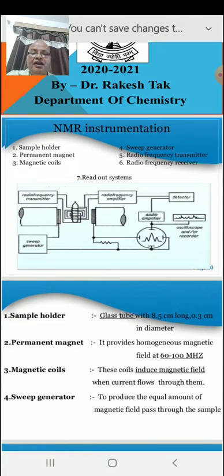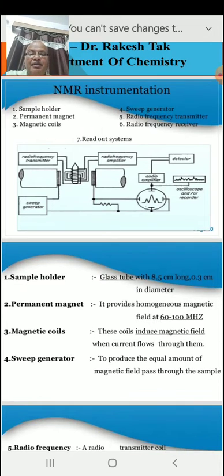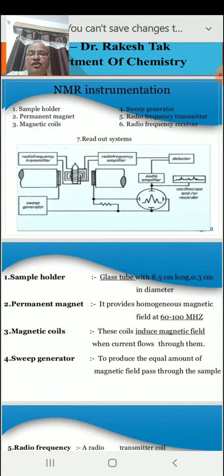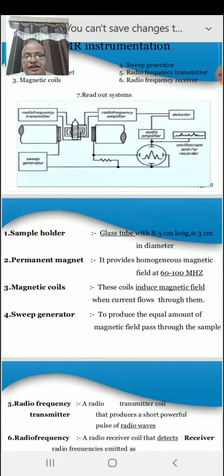The permanent magnet provides a homogeneous magnetic field of 60 to 100 megahertz. Magnetic coils introduce a magnetic field when current flows through them. The sweep generator is used to produce an equal amount of magnetic field, which is passed through the sample.